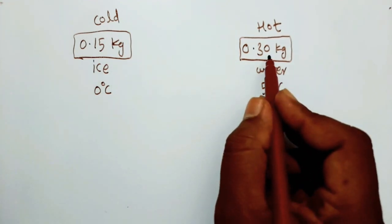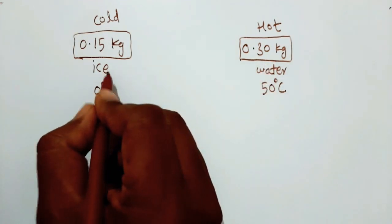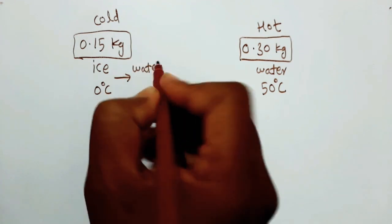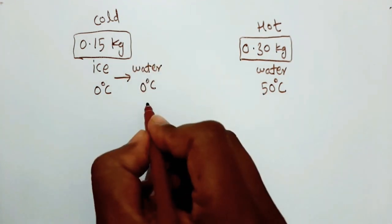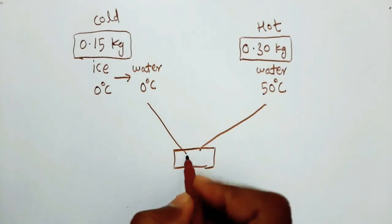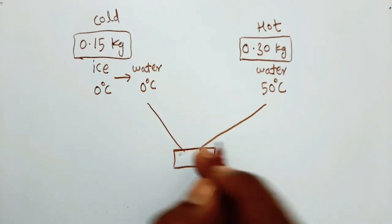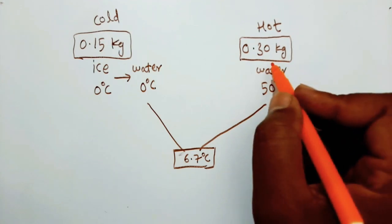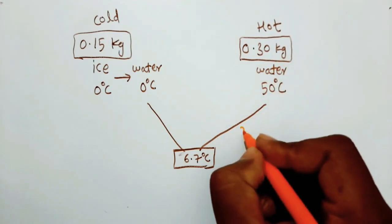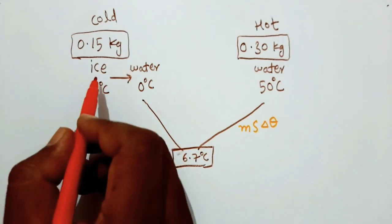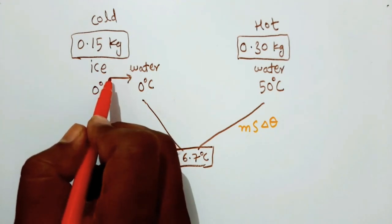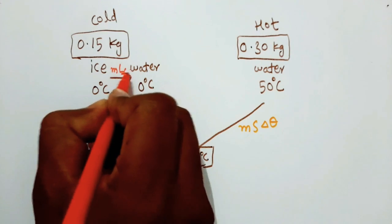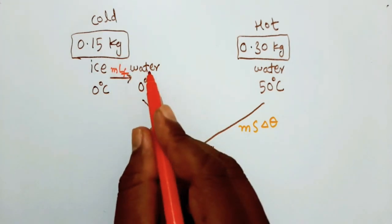The heat lost by the hot body is used to change the phase of ice — that is, ice at 0 degree Celsius to water at 0 degree Celsius. The final temperature is 6.7 degree Celsius. For the ice, there is a phase change, so the required heat is M times LF. For the water, there is no phase change, so the required heat is M times S times delta T.